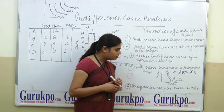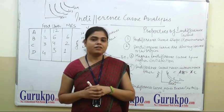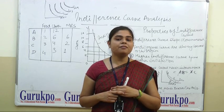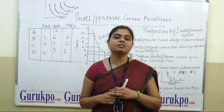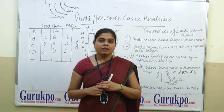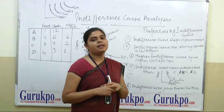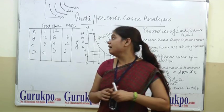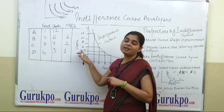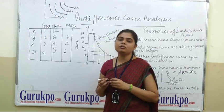The last property is that an indifference curve never touches the axis. An indifference curve represents a combination of two goods. If one good touches the X-axis or Y-axis, it means its quantity is zero. If one quantity is zero, there is no combination of two goods. That is why it is a property that the indifference curve never touches the axis — if it touches the X-axis, it means the food quantity is zero, and if one commodity's quantity is zero, it cannot form a combination of two goods.